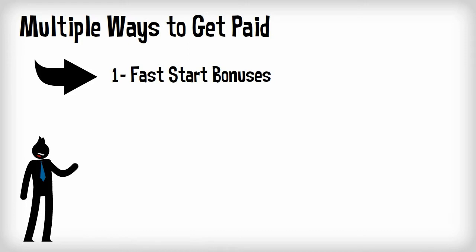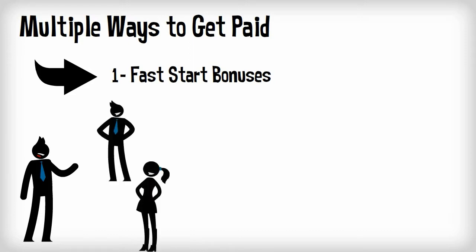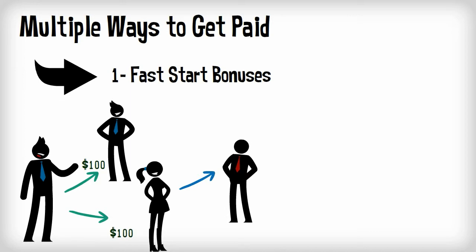The first way to get paid with Preservation of Wealth is the fast start bonus. When you introduce another individual and they join with either an annual benefits package or a premier package, the company will send you an immediate fast start bonus of $100. And when one of your personally sponsored members sign someone up, you'll receive a $50 fast start bonus. These bonuses are paid weekly and they'll provide you with nice upfront cash.